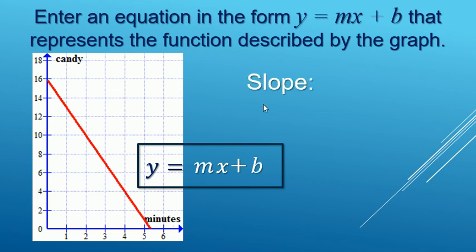So for the M, we do need to find the slope. Slope is rise over run. We're going to start by finding two nice points. There's one here and one there.